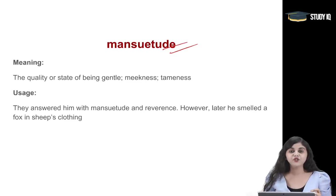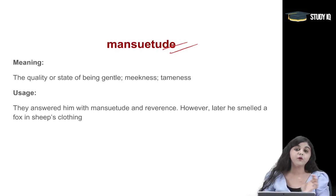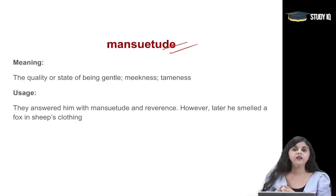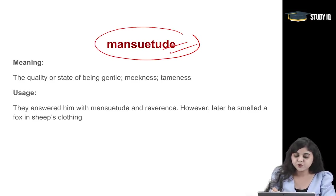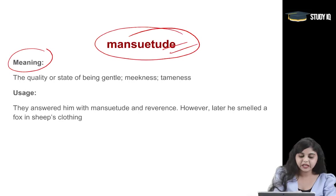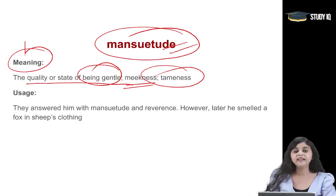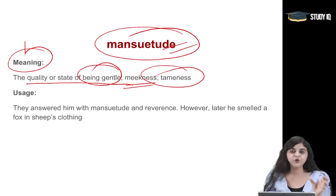Moving on to the next word of the day: mansuetude. Mansuetude means a very gentle, meek person who speaks very kindly and humbly. Meek in a positive way — someone who is very gentle by disposition, who speaks with great love and humility. In Hindi its meaning is namrita ya somyata (gentleness or mildness). That particular attribute is called mansuetude. The meaning of mansuetude: the quality or state of being gentle, tame, meek.